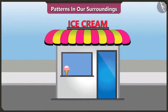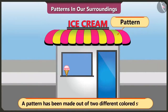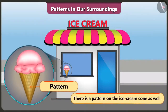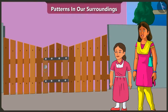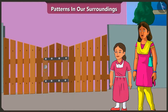Now look at the roof of this ice cream shop — two different color stripes have been used to make a pattern, and the ice cream cone also has a pattern. They reach home and notice the door also has a pattern, where strips go from big to small and then small to big, repeating.